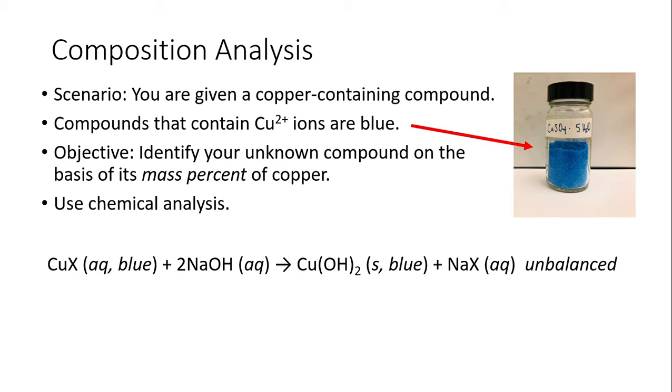In the next step—oh by the way, we say here unbalanced because since we don't know what X is, we can't fully balance this equation—we're going to take that copper two hydroxide that we produced and we're going to heat it to convert it into a very stable compound, which is copper two oxide.